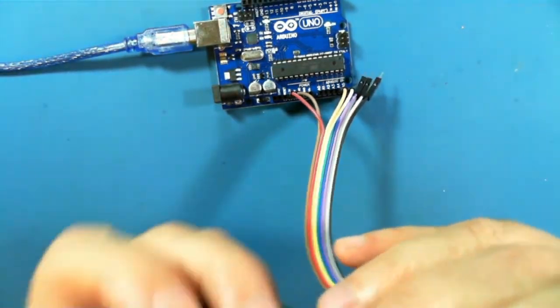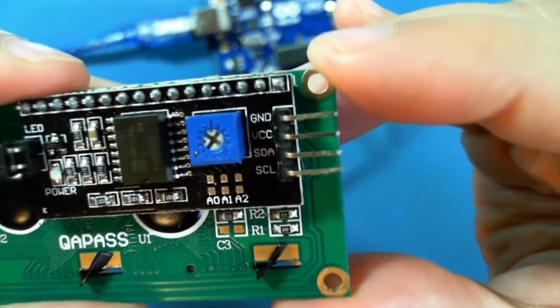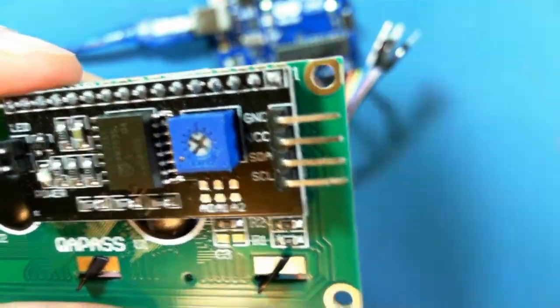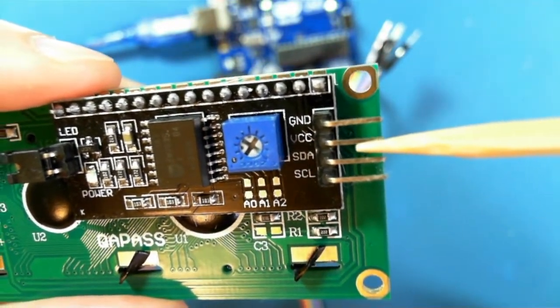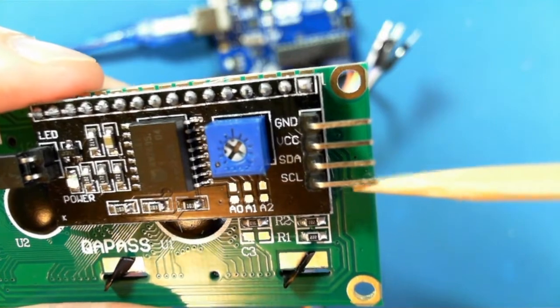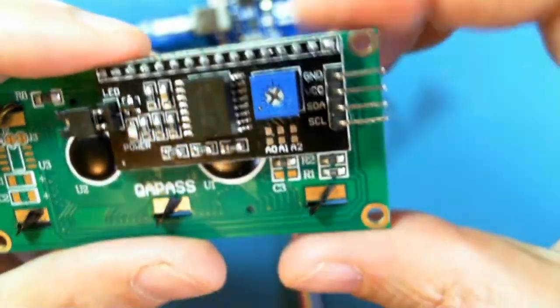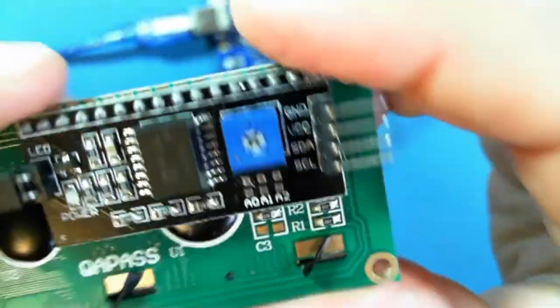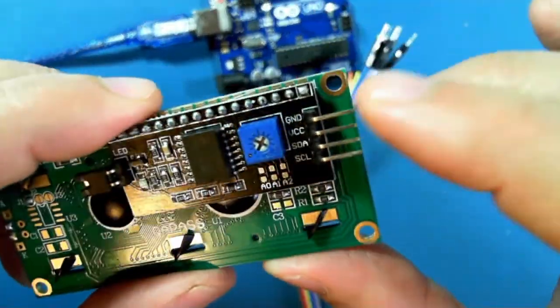And then here I have four inputs: ground, VCC, SDA and SCL. I'm always getting SDA and SCL mixed up but if it's wrong hopefully we'll get it to connect up properly just by switching these two.